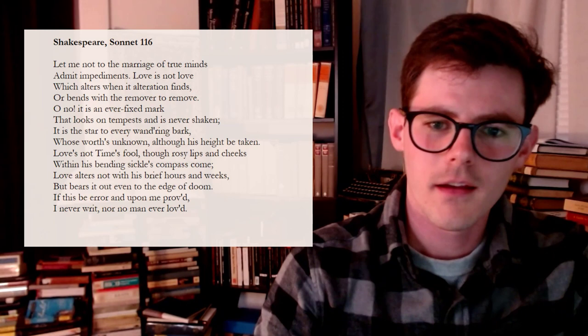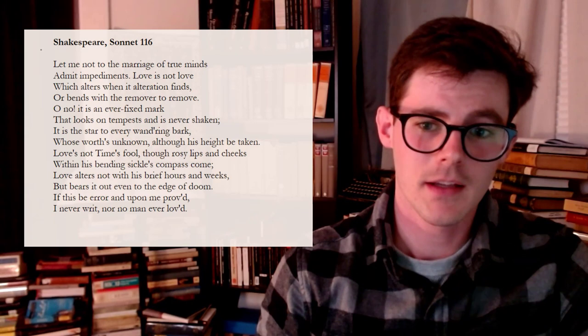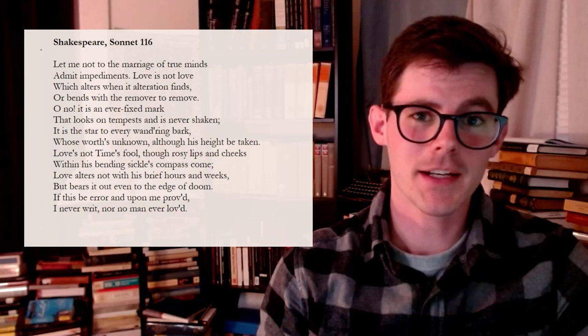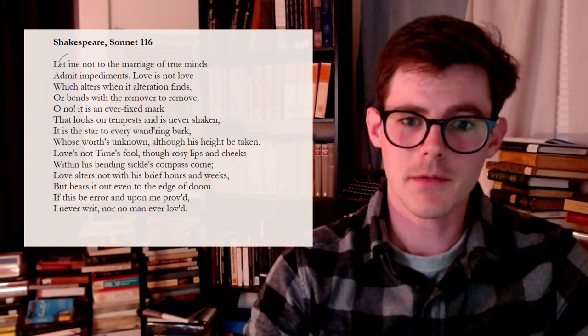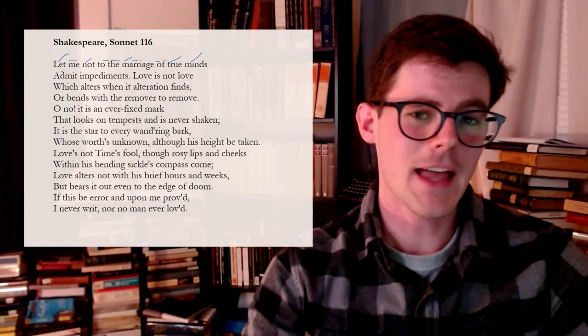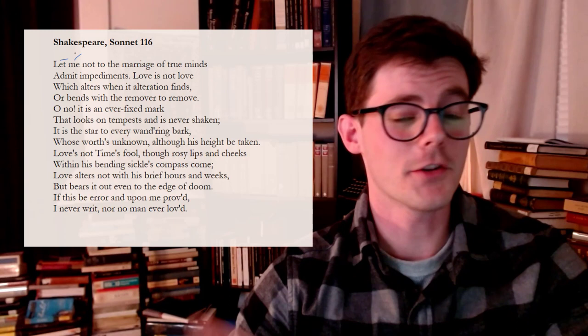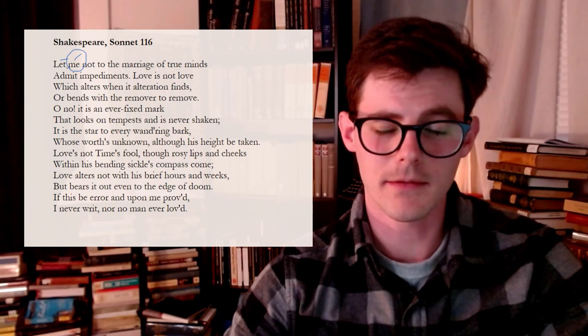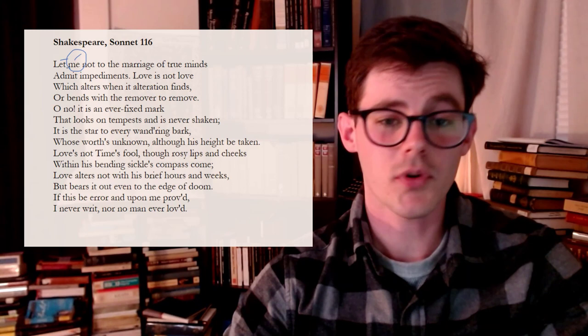"Let me not to the marriage of true minds admit impediments. Love is not love which alters when it alteration finds, or bends with the remover to remove." Notice how most people read it at weddings with two trochees: "Let me not to the marriage of true minds." But reading it in iambic pentameter: "Let me not to the marriage of true minds admit impediments." With that stress, the speaker sounds like someone in the audience of a wedding, not one participating in or praising marriage. Helen Vendler talks about this.